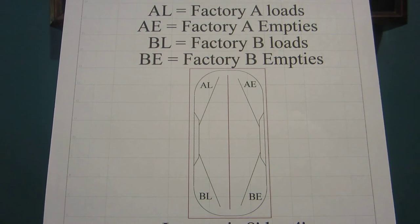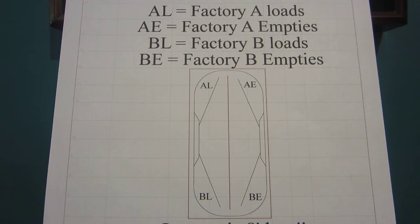The key observation here is that it will require a facing point maneuver in order to get the loads and empties to their respective places because the factory A spurs are facing opposite of one another. The same is true for the B spurs. Please watch the Glacier Line YouTube video channel demonstrating facing and trailing point moves.